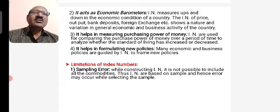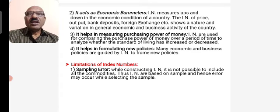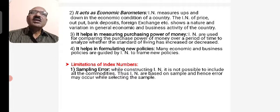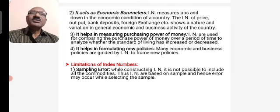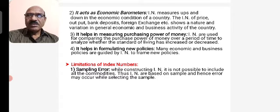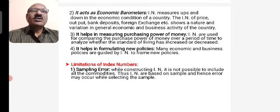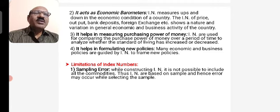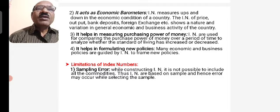It helps in measuring the purchasing power of money. The purchasing power is 1 upon the cost of living index. If the cost of living index is 100,000 and then 50,000, the purchasing power changes accordingly — if you have 1,000,000 rupees, you may only effectively buy goods worth 1,000 rupees. So purchasing power decreases as the price index rises. It also helps in formulating new policies. The government uses economic and business policies guided by index numbers to frame new policies.